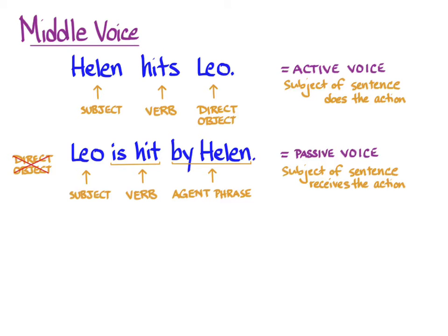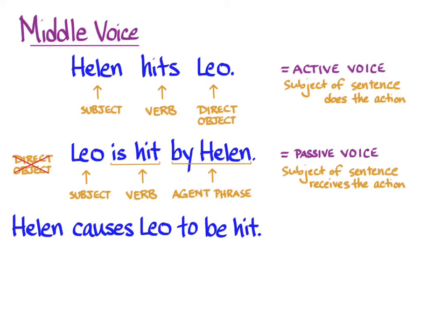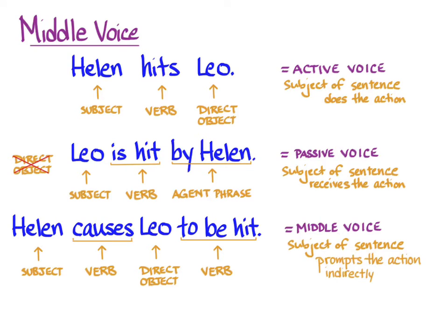English doesn't have a middle voice, but it does express things that Greek uses the middle voice to express. For instance: 'Helen causes Leo to be hit.' Helen is the subject, 'causes to be hit' is the verb, and Leo is the direct object. Helen is the grammatical subject making the action happen but indirectly, and Leo is still receiving the blow as the direct object. Another thing the middle voice often does is express an action in which the subject has a special or selfish interest — perhaps Helen hits Leo for herself. Most often, verbs have a particular meaning in the middle voice that you will learn as part of your vocabulary.